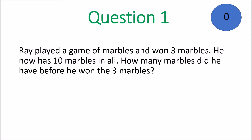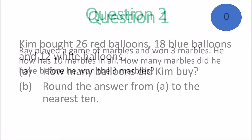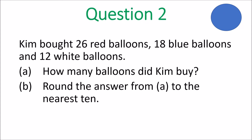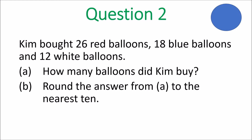Now we are on Question 2. Kim bought 26 red balloons, 18 blue balloons, and 12 white balloons. A: How many balloons did Kim buy? B: Round the answer from A to the nearest 10.